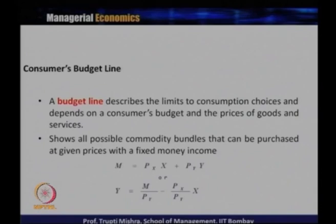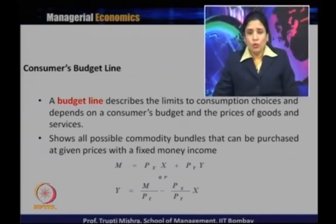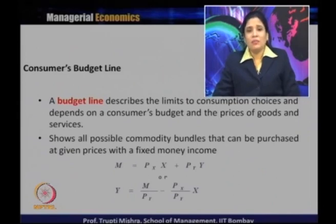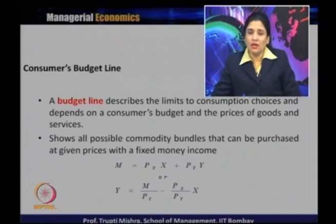What is a budget line? The indifference curve gives us consumer preferences and the different combinations of goods and services that yield the same level of satisfaction. More is always better for the consumer, but affordability poses a constraint. Consumer income is represented by the budget line, which describes the limits to consumption choice depending on consumer budgets and prices of goods and services. It shows all possible commodity bundles purchasable at given prices with a fixed money income.